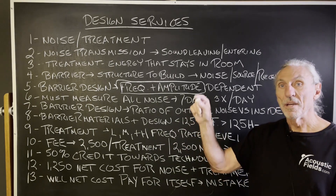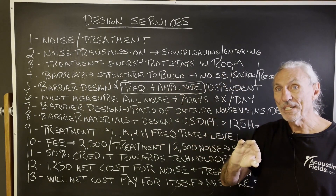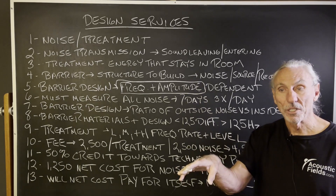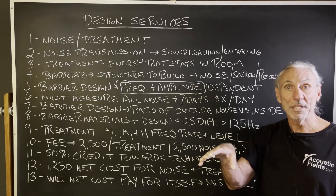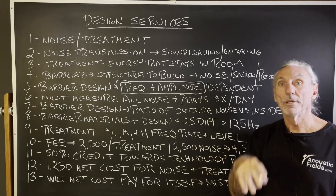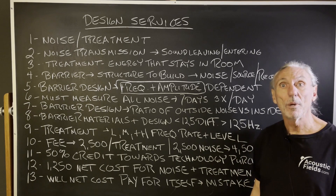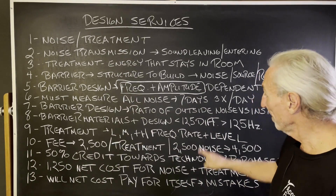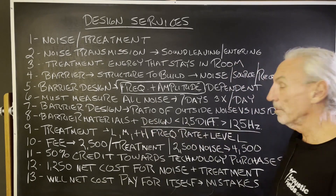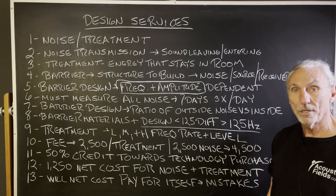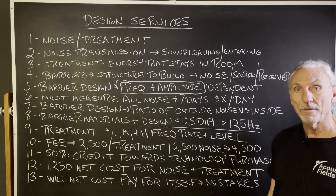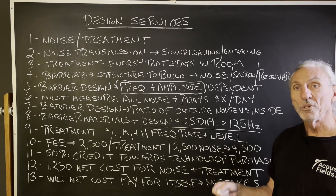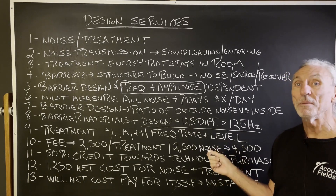Barrier design is a ratio of the outside noise to how quiet we need it on the inside. What noise floor do we want in the room? What's the usage? A vocal room needs a lower noise floor than a mixing room, which needs a lower noise floor than a two-channel playback or theater. What are your goals? Barriers below 125 Hz are completely different than barriers for noise above 125 Hz — voice, bass — they're completely different. That's why you have to measure. The old carpenter adage: measure twice, cut once — couldn't be more applicable.